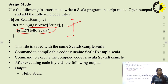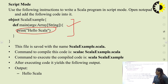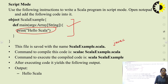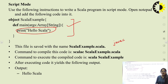This file is saved with the name ScalaExample.scala. The command to compile this code is 'scalac ScalaExample.scala'. In Java, we use 'javac' for compiling. To execute the compiled code, we use 'scala ScalaExample'. After executing, the following output will be shown: Hello, Scala.